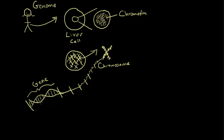The last structure we're going to talk about within DNA are the rungs of the ladder itself, and they are called bases. Bases we will talk about in greater detail in a later video, but bases are the chemicals that make up the rungs of the ladder, and they are smaller than a gene.